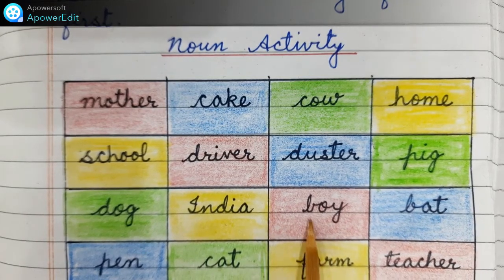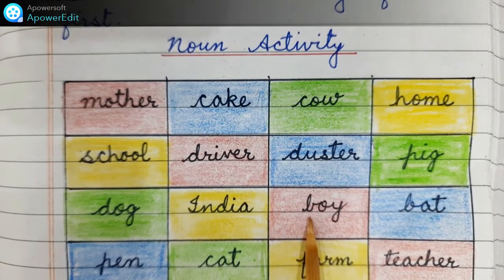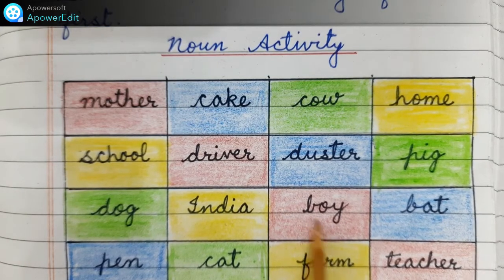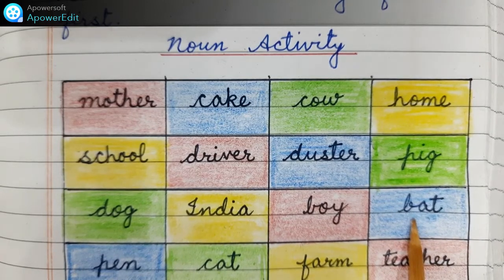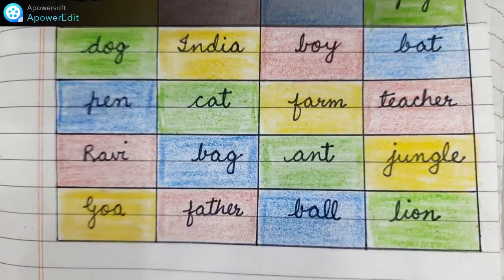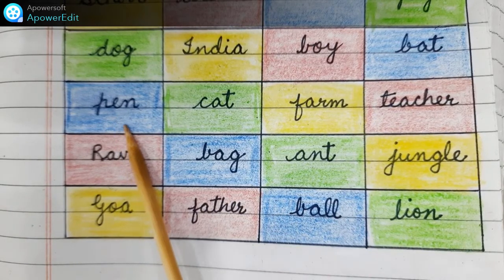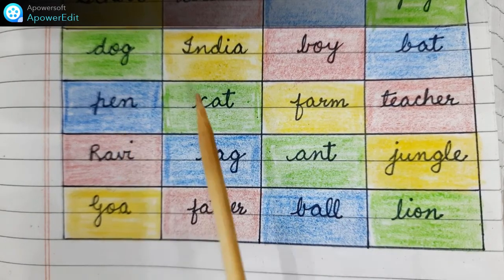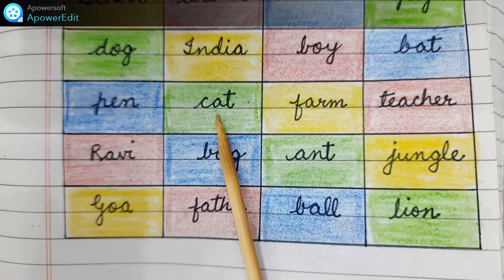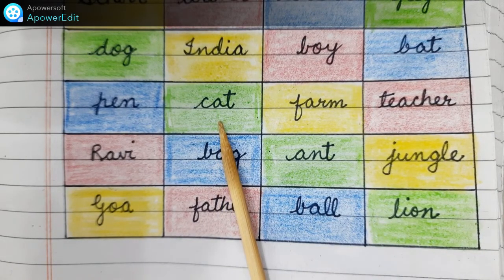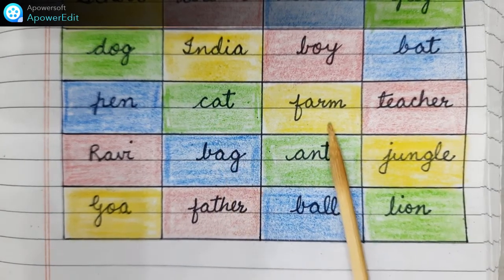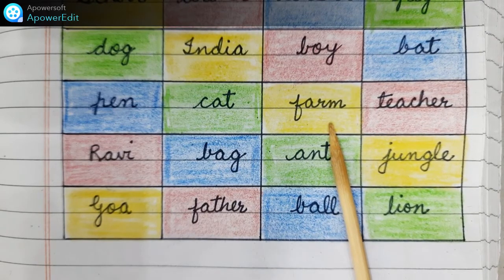Boy is the name of a person so we will color it red. Bat is the name of a thing so we will color it blue. Pen is the name of a thing so we will color it blue. Cat is the name of an animal so we will color it green. Farm is the name of a place so we will color it yellow.